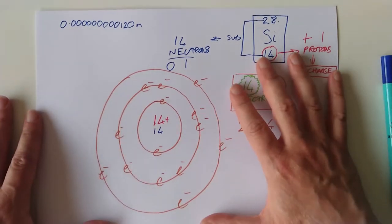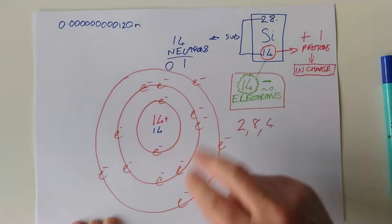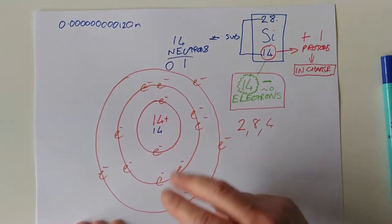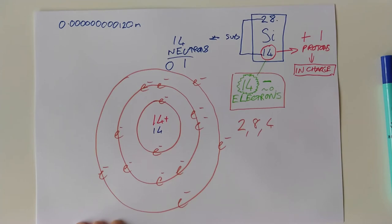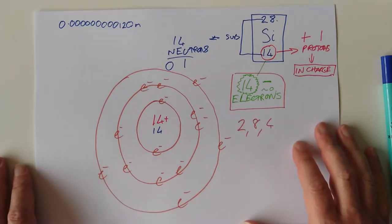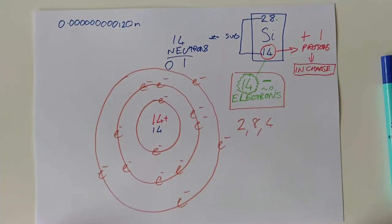So learning outcome number one: electrons don't all bunch together in one place — they spread out in layers, filling from the inside outward. You can fit 2 in the first layer and 8 in all layers after that — though that's a simplification. For this task, don't go past element 20. As Jack Nicholson said, you can't handle the truth just yet — we'll cover the full picture in sixth year.